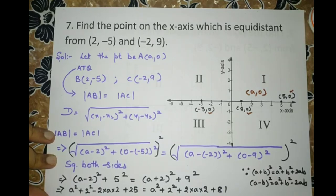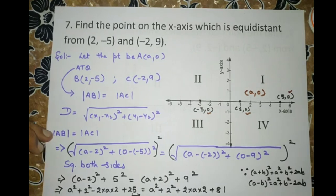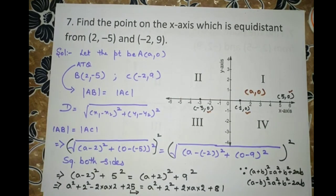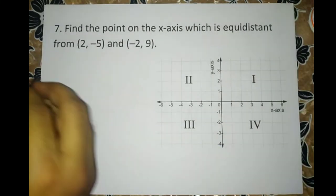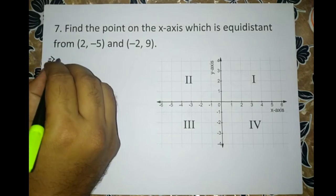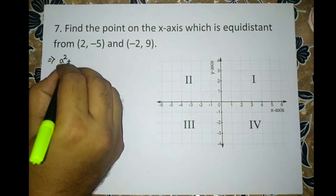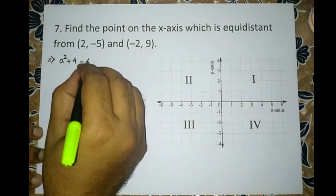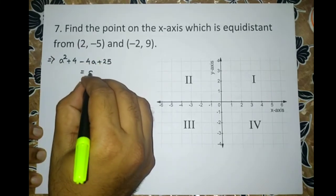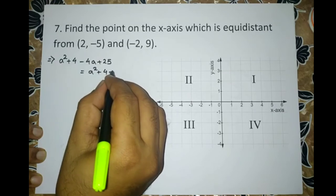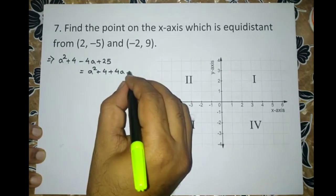Now I will collect the variables on one side and the pure numbers on the other side. When A square comes to this side, it will become A square minus A square. Similarly, minus 4A minus 4A equals 81 minus 25.